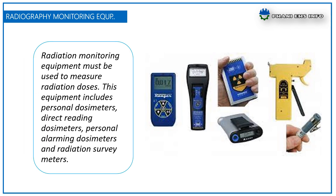Regarding radiation safety monitoring equipment: radiation monitoring equipment must be used to measure radiation doses. This equipment includes personal dosimeters, direct reading dosimeters, personal alarming dosimeters, and radiation survey meters.